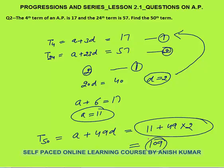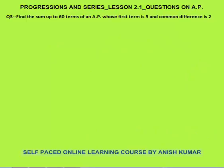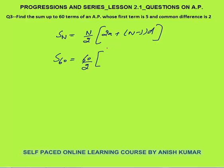Next: find the sum of 60 terms of an AP whose first term is 5 and common difference is 2. The sum of first n terms = n/2 × [2a + (n−1)d]. Sum of 60 terms = 60/2 × [2×5 + 59×2] = 30 × [10 + 118] = 30 × 128.